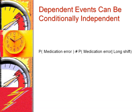It is possible for two events to be dependent, but when conditioned on the occurrence of a third event, they may become independent of each other.